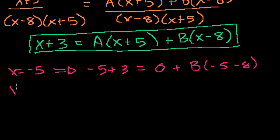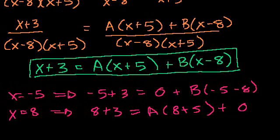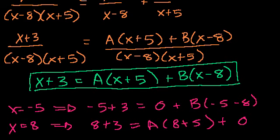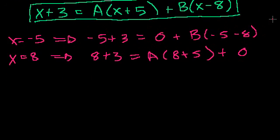Then I picked x equals 8 to make this equal to 0. That made us 8 plus 3 equals a times 8 plus 5 plus 0. Then you would just get a equals 11 over 13. And then we were done and we knew what our decomposed fractions are, or the partial fractions of this larger one. I don't know exactly how that terminology should apply, but you get the point.